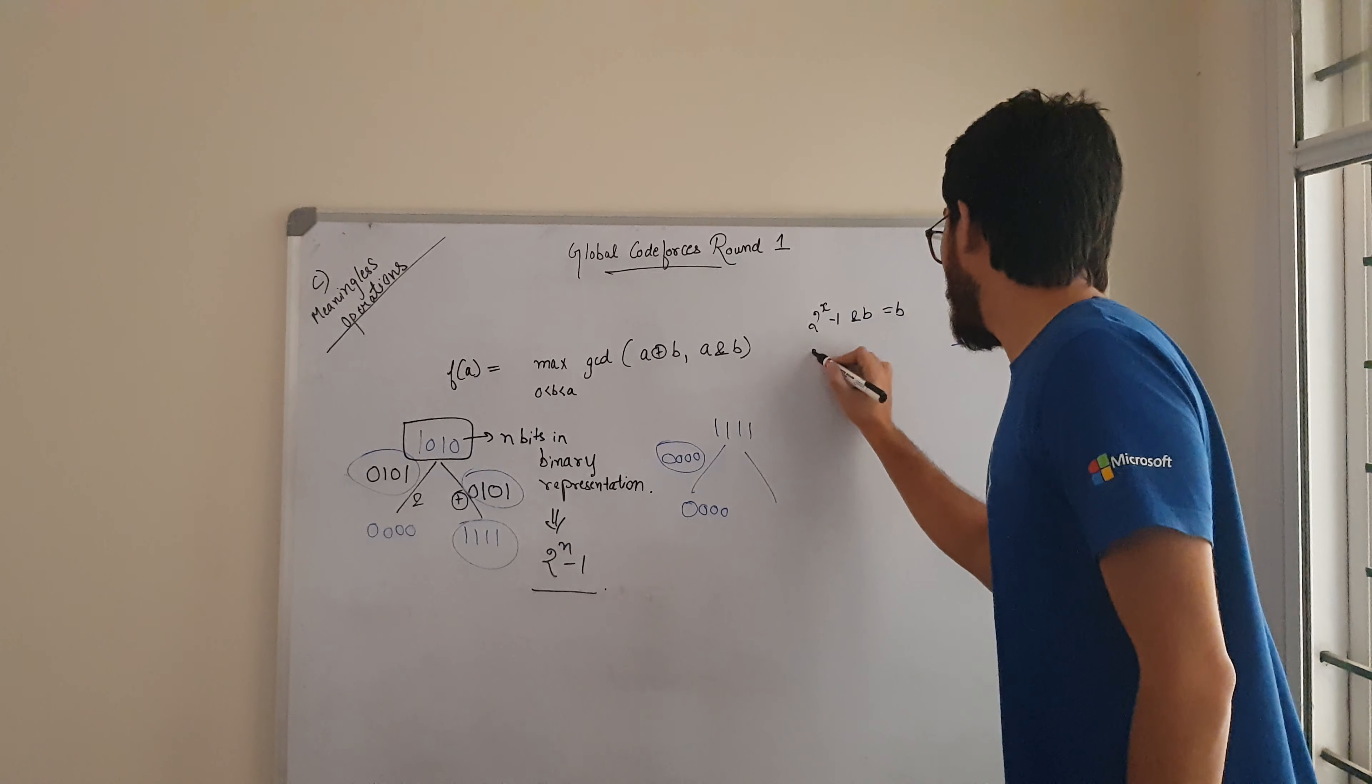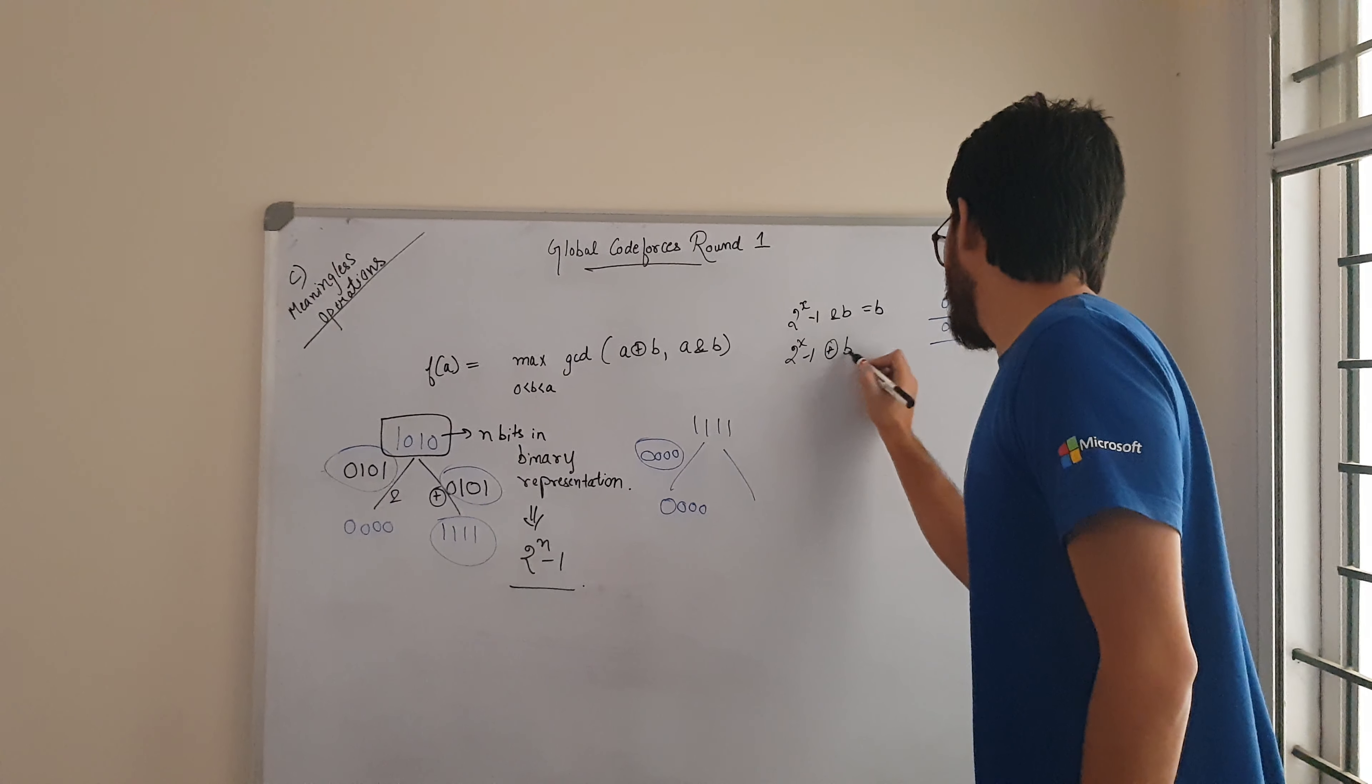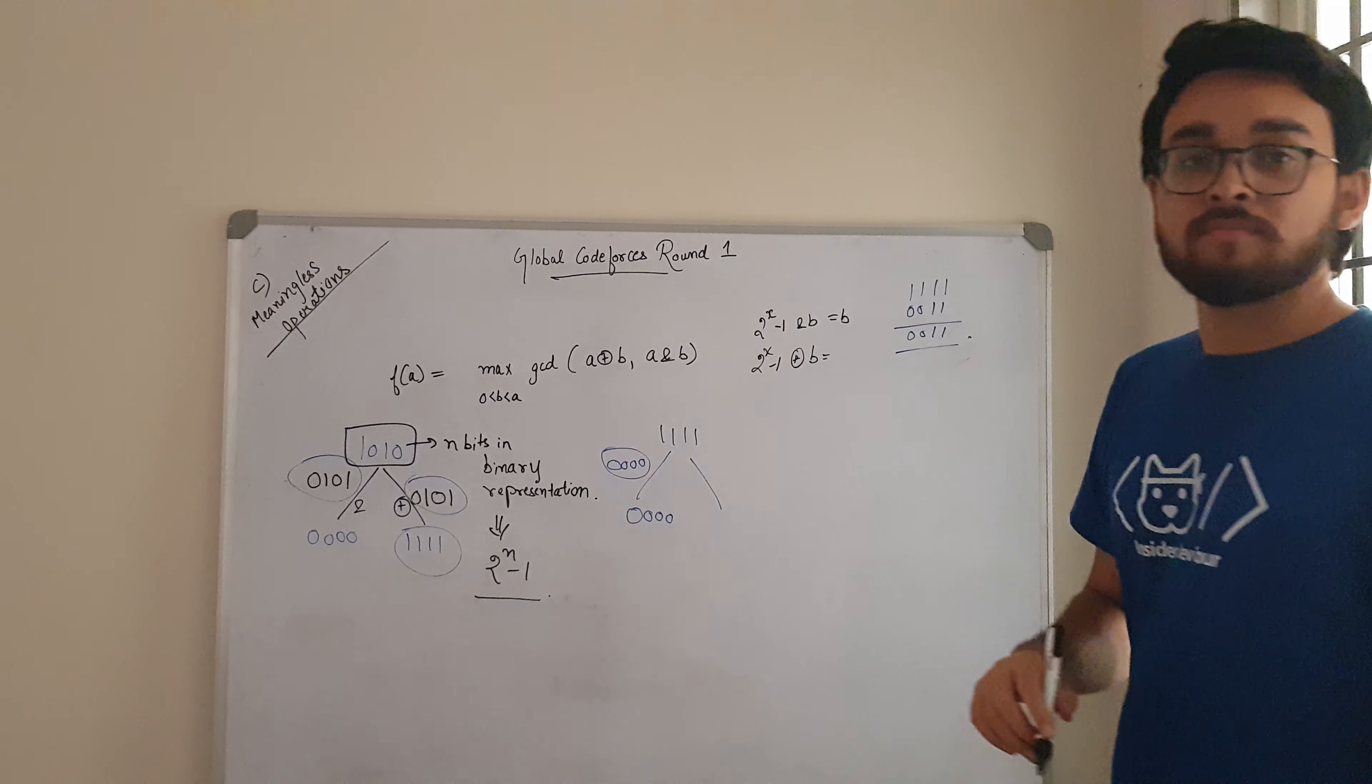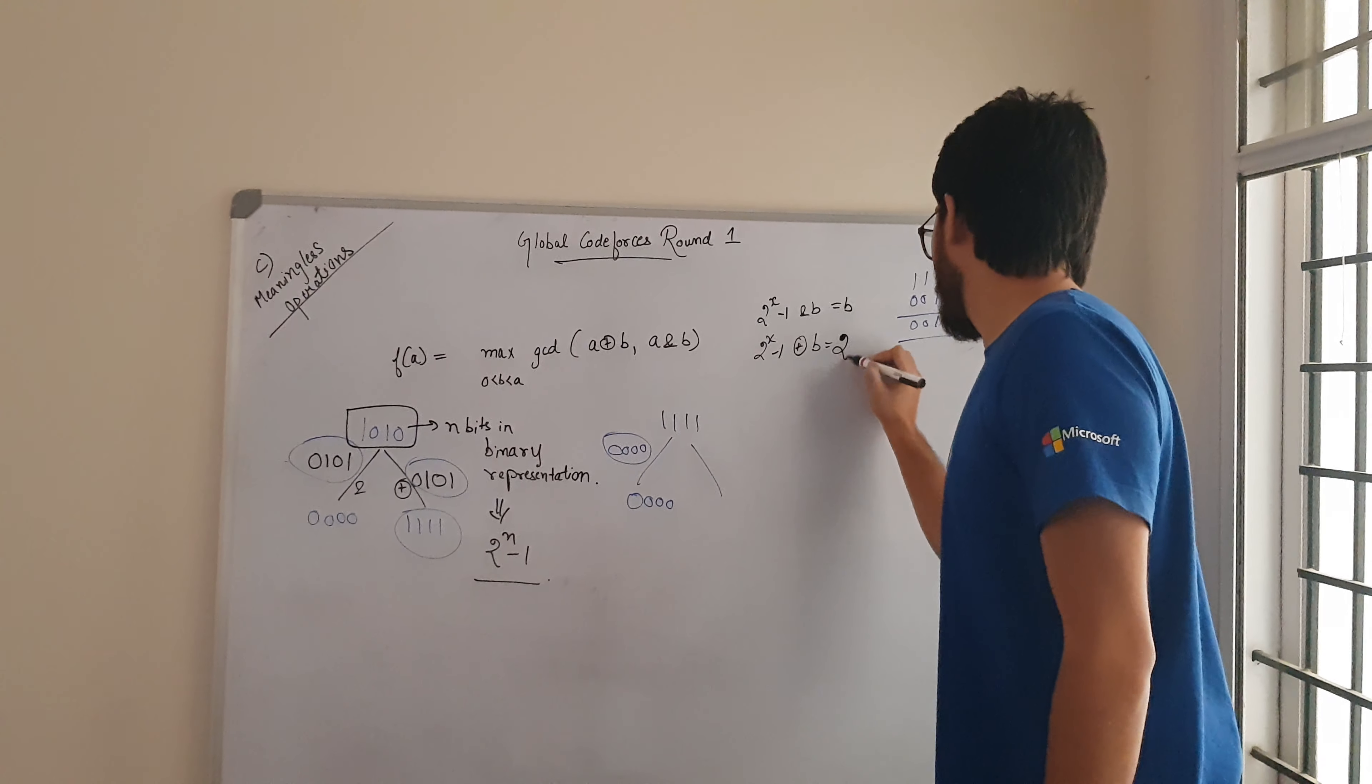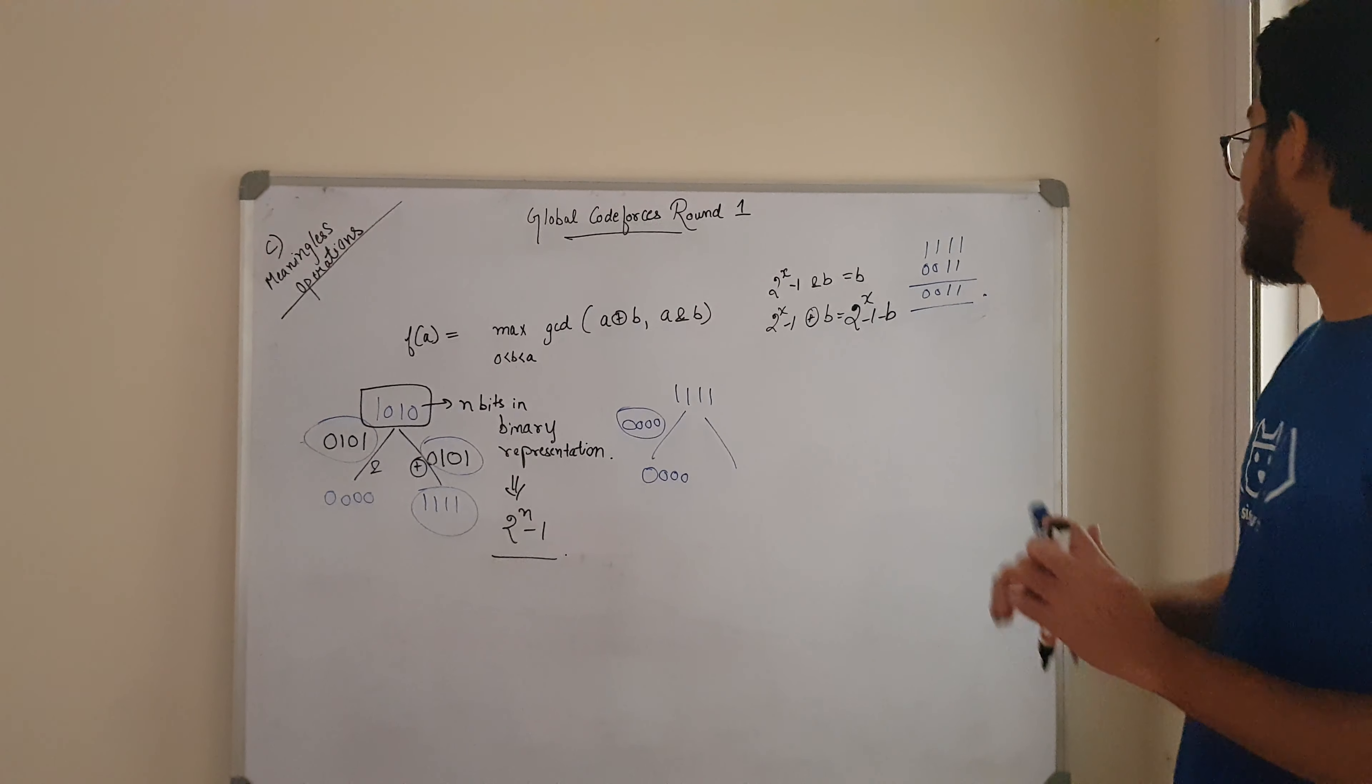Now there is another thing. If you have 2 to the power x minus 1 XOR with B, it will be equal to 2 to the power x minus 1 minus B. Let's check that as well.